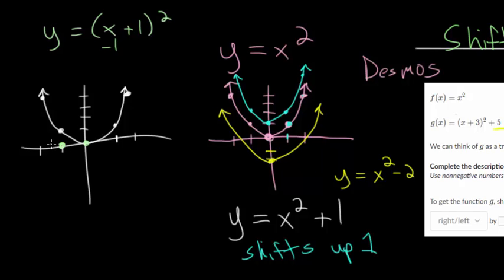So the vertex gets shifted over to the left, 1 unit. But you can think about other points. Like if you plug in x equals 0. You would get 1 squared, which is 1. So that would be here. And if we plugged in x equals minus 2. You'd get minus 1 squared, which is 1. So that would be here.